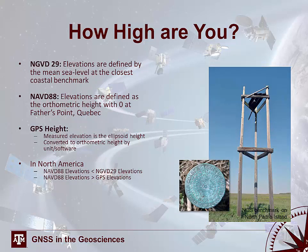To recap: NGVD-29 elevations are defined by the mean sea level at the closest coastal benchmark, which assumes sea level is uniform everywhere and there is no plate tectonic drift. However, NAVD-88 is a newer vertical datum where elevations are given as orthometric height in reference to the Father's Point, Quebec initial point, and it does account for plate tectonic shifts. GPS natively measures elevation as the ellipsoidal height, which is then converted to orthometric height by the receiver unit or external software. In North America, NAVD-88 elevations tend to be less than NGVD-29 elevations, and NAVD-88 elevations tend to be greater than GPS elevations.